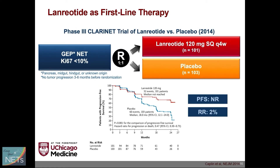This is the phase 3 CLARINET study that looked at lanreotide. This study enrolled patients with GI and pancreatic neuroendocrine tumors, as well as neuroendocrine tumors of unknown primary, with Ki-67 of up to 10%, randomized one-to-one to lanreotide versus placebo. By the time of publication, the median progression-free survival in the lanreotide group was not reached, with more than 60% of patients still with stable disease at the 27-month cutoff, compared to 18 months in the placebo group. The response rate was similarly only 2%.